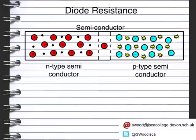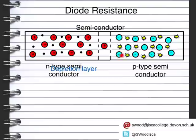A diode is made up of a semiconductor — specifically two semiconductors known as an N-type semiconductor and a P-type semiconductor. In the middle, at the join of the two semiconductors, is something known as the depletion layer. The red dots with positives are positive ions, and the black dots are electrons — these are the charge carriers. The blue dots with negatives are negative ions, and then there are holes where electrons used to be, which act as a positive charge.